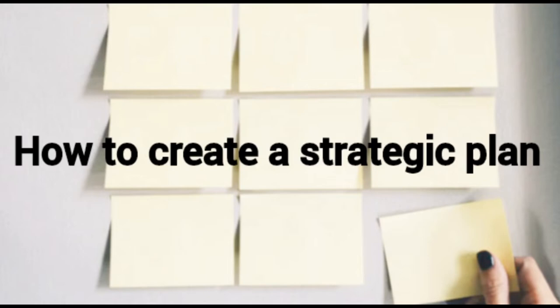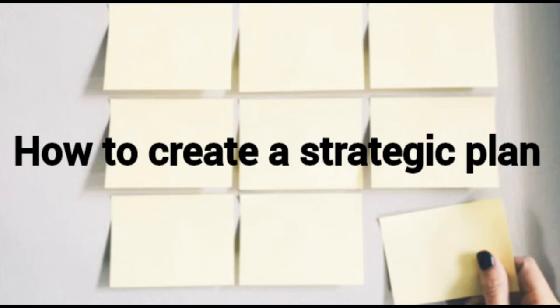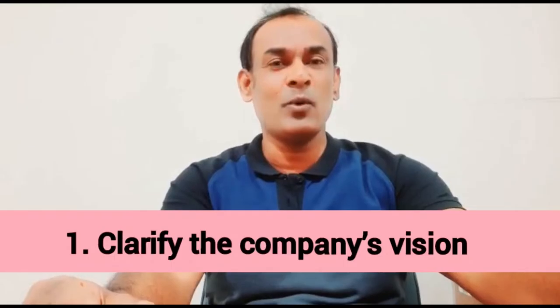The six steps are: one, clarify the company's vision; two, make an outline; three, create detailed goals; four, decide how to track your progress; five, involve all employees; and six, follow up routinely. Let's understand each of them point by point.